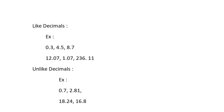Next, unlike decimals. Decimals having different numbers of decimal places are called unlike decimals. For example, 0.7 and 2.81. Here the decimal place values are different.